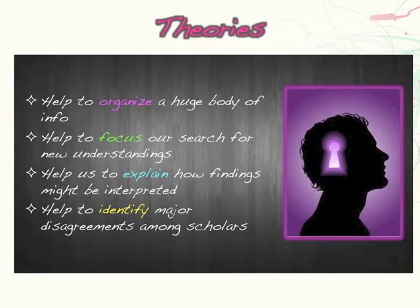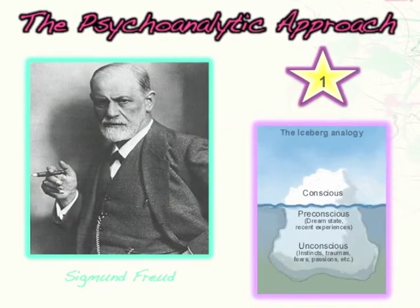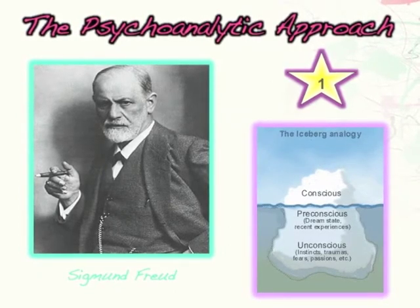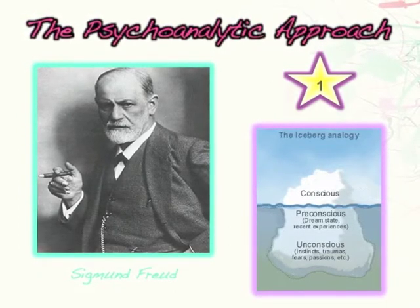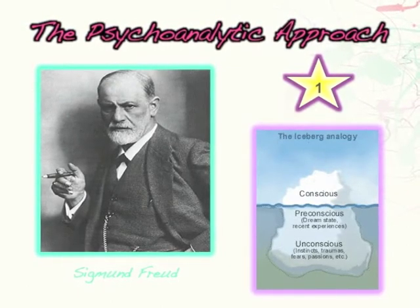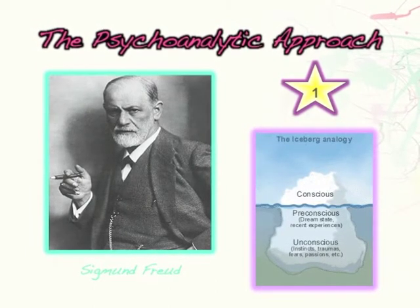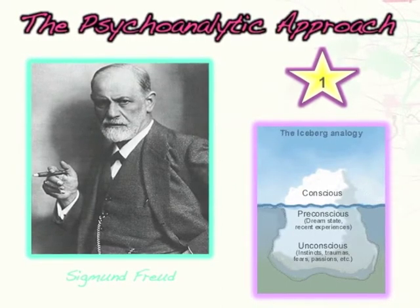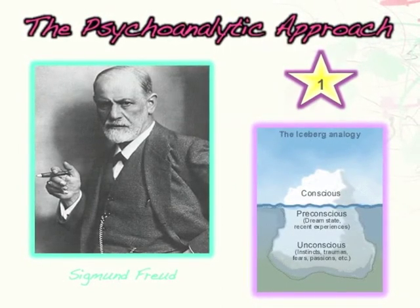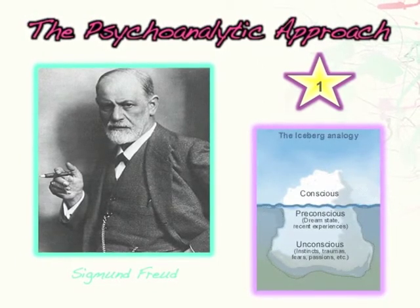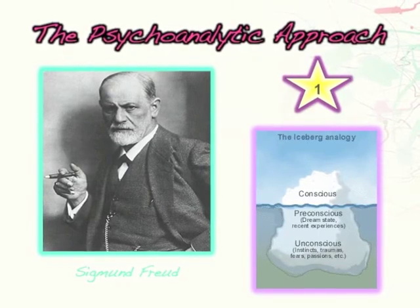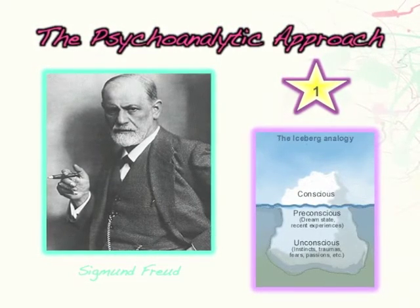In this chapter, we're going to look at eight major developmental theories that attempt to explain the factors that influence and cause development in human beings. There are several different approaches to understanding human development, and within each approach there are several different theories. The first approach is called the psychoanalytic approach, created by Sigmund Freud. The underlying idea is that we have unconscious forces that motivate our development. The theory we'll discuss from this approach is Freud's psychoanalytic theory.